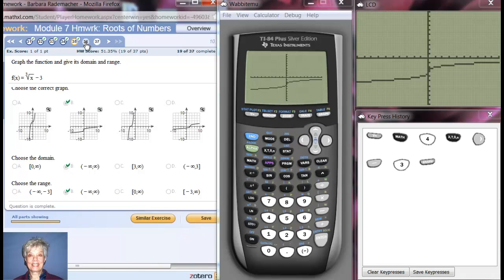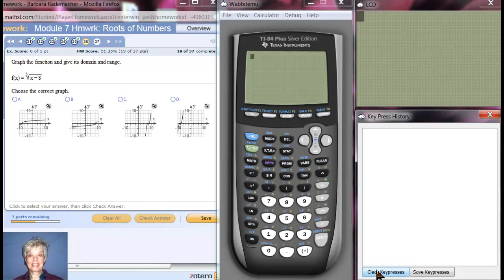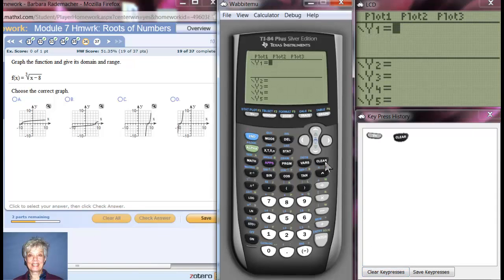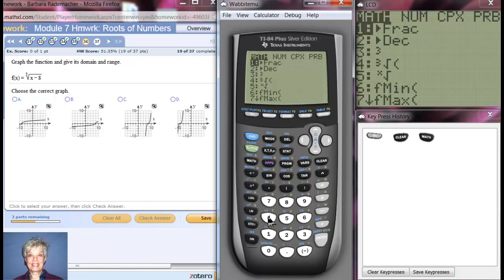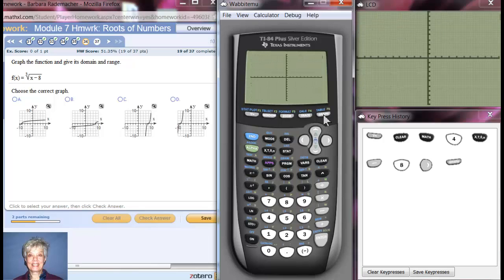Now number 36. Let's clear and clear and go to y equals and clear. This time notice that the minus 8 is going to be under the radical with x. So I'm going to go to math and I'm going to go to 4 which is where the cube root is. Now I'm going to say x minus 8 and then I'm going to hit the right arrow key and then I'm going to graph. There's your graph right there, it's b.